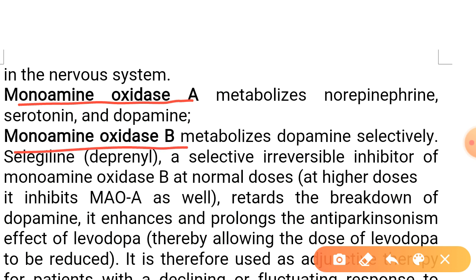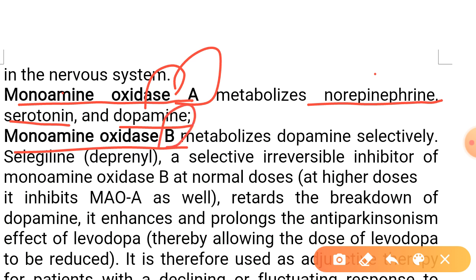Monoamine oxidase A is responsible to metabolize norepinephrine, serotonin, and dopamine — it is non-selective. Whereas monoamine oxidase B is selective for the breakdown or metabolism of dopamine specifically. It is particularly selective and responsible to metabolize dopamine.